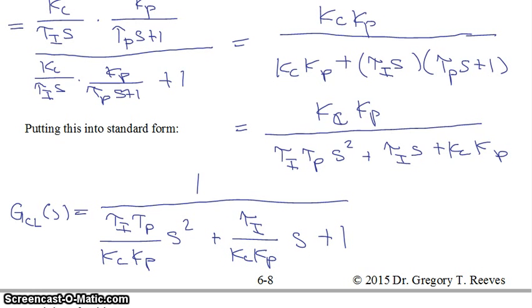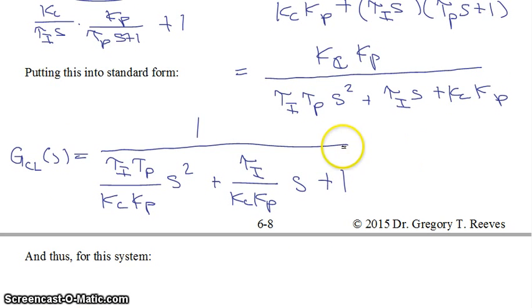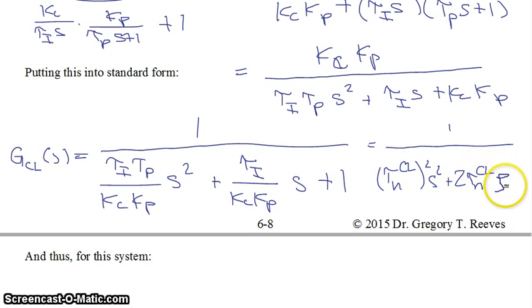And what that means is, if we compare that to a standard form for a second order system, which is equal to 1 over tau n closed loop squared s squared plus 2 tau n closed loop times zeta closed loop times s plus 1—sorry that I ran out of room there—if we compare that, this is in that form because you have a constant times s squared, a constant times s, plus 1.